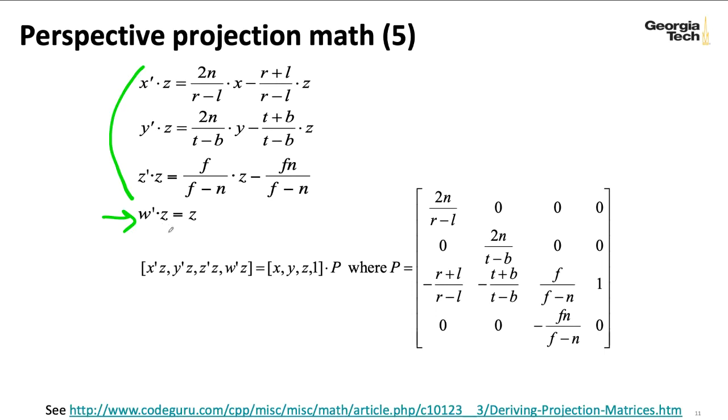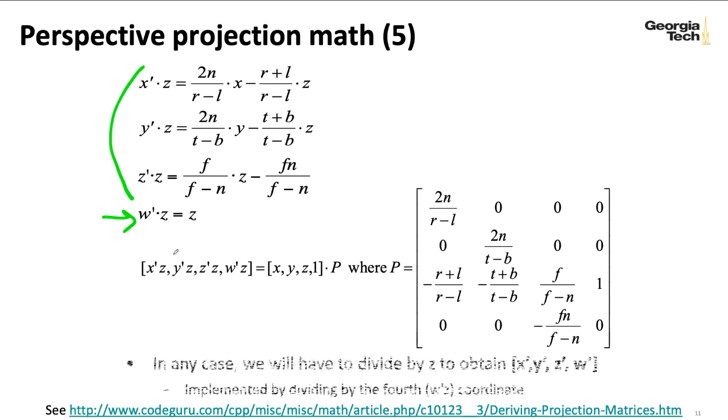And now I've got a question of, well, what do I really want to do with this W prime coordinate? So the convention is that we want to eventually divide everything by Z, right? We want to get rid of this Z, this Z, this Z, and this Z.